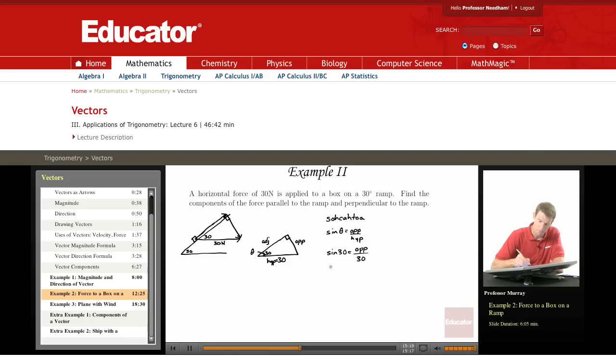So sine of 30 is equal to the opposite over the hypotenuse which is 30. So the opposite is equal to 30 sine of 30. That's one of my common values. I remember the sine of 30, that's pi over 6. The sine of pi over 6 is 1 half. So that's 15 newtons.